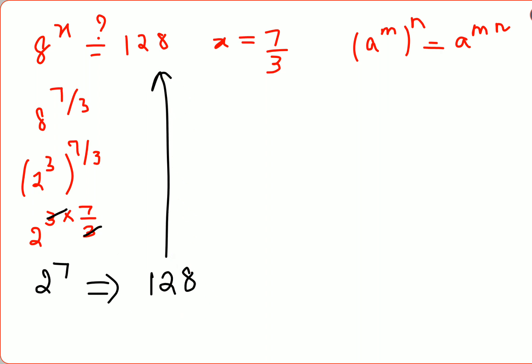Therefore I can say value of x is either 7 upon 3, or we can say value of x is 2 and 1 upon 3, or we can even say value of x is 2.33 recurring. I hope this is very clear to everyone. That's it for today, I will see you in the next video.